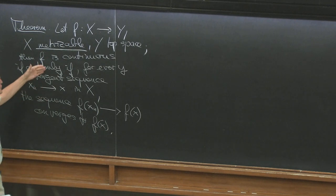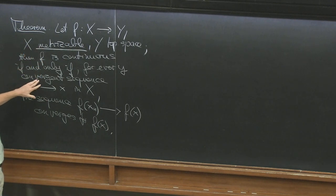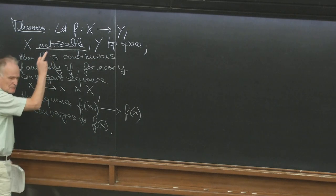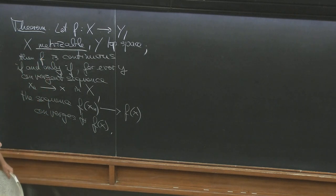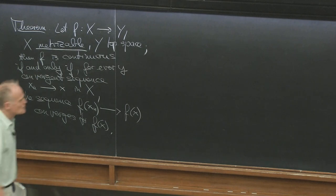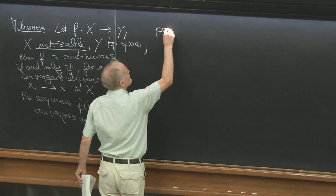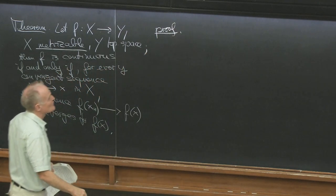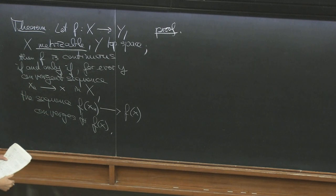We can use sequences to characterize continuity, but we need the hypothesis that X is metrizable — otherwise it's not true. If X is not metrizable, this is not true. For metric spaces, metrizable spaces, we can use sequences.